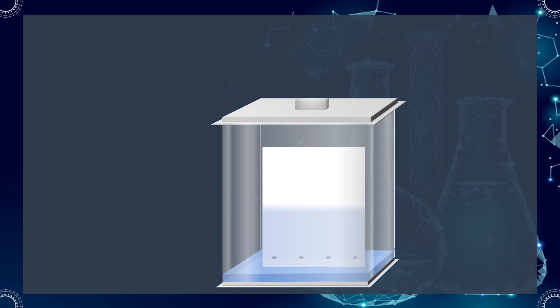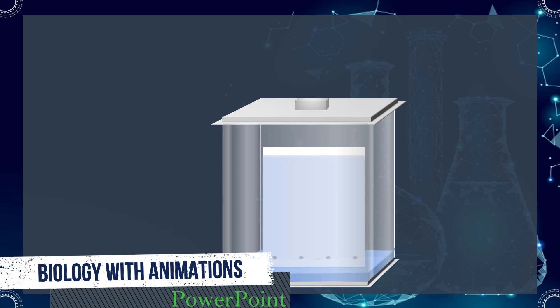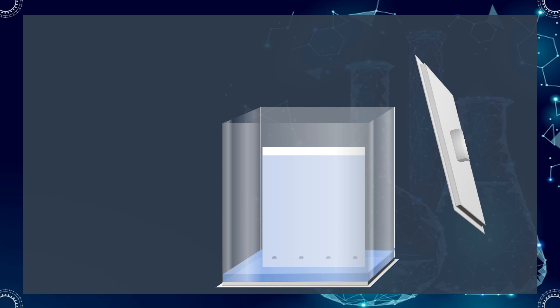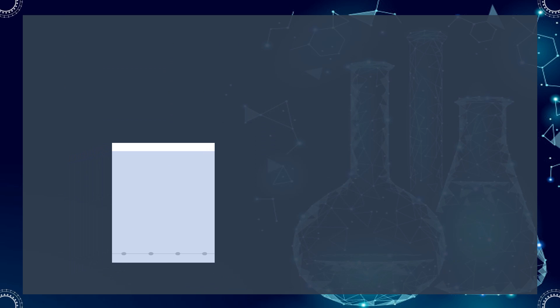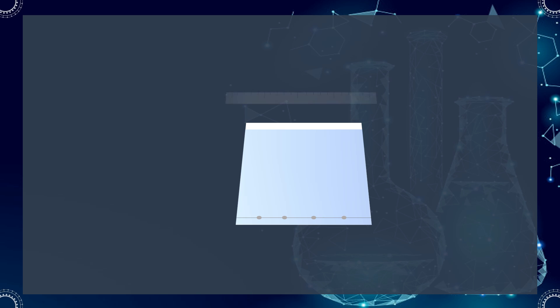The solvent is allowed to rise until it almost reaches the top of the plate. That will give the maximum separation of the components. The plate should be removed from the chamber before the solvent front reaches the top of the stationary phase. Then this front is marked.